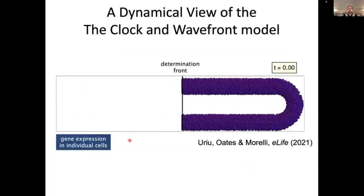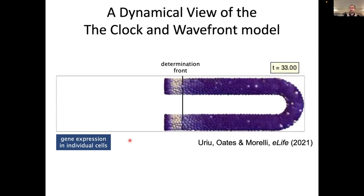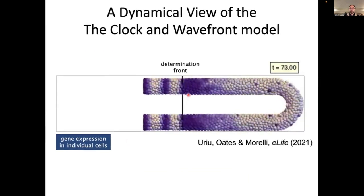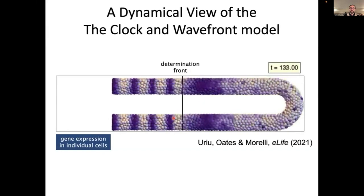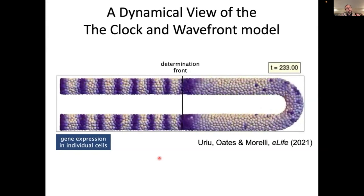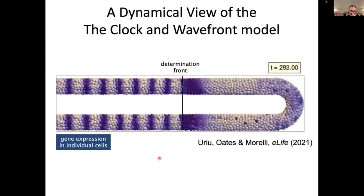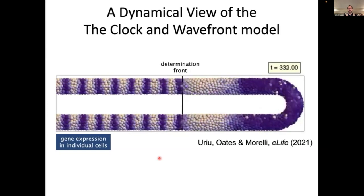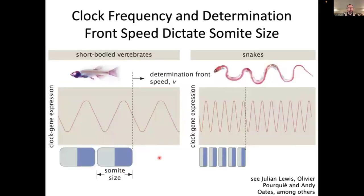A better way to see this is through a movie put together by Andy Oates and Luis Morelli. Here, what you're going to see in blue is the gene expression oscillations, and you're going to see how the end of the embryo is moving with respect to the determination front. Every time an oscillation hits the determination front, you get a somite specified. Just to give you some sense: the difference between a short-bodied vertebrate like a fish and a long-bodied vertebrate like a snake has to do with the speed of this determination front and the frequency of the oscillations.